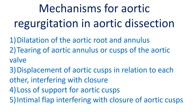Several mechanisms for aortic regurgitation in aortic dissection include: dilatation of the aortic root and annulus; tearing of the aortic annulus or cusps of the aortic valve; and displacement of aortic cusps relative to each other, interfering with closure.